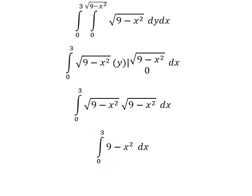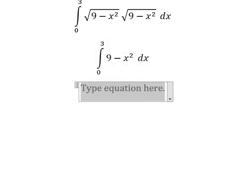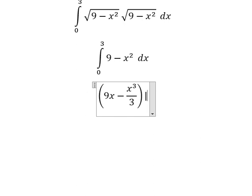And now we can get the final answer. The integration of nine minus x squared. We have the integration of x where we have x to the power of three over three, and we put the bounds from zero to number three.